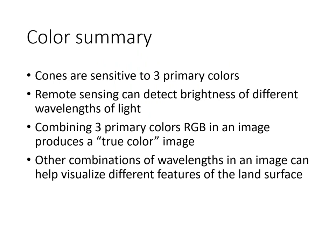To summarize: cones are sensitive to three primary colors. Remote sensing can detect brightnesses of different wavelengths of light. You can combine red, green, and blue in an image to produce a true color image, but you can use other combinations of wavelengths to visualize different features of the land surface.